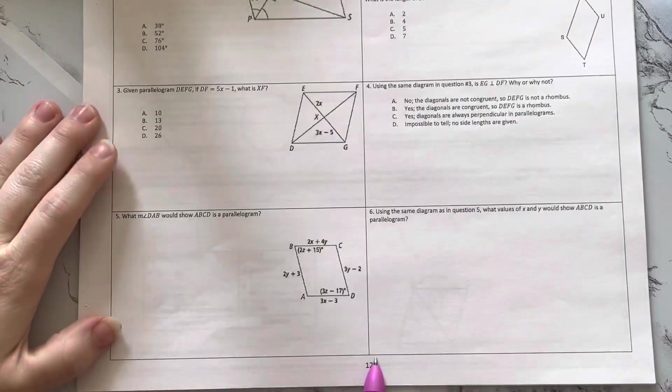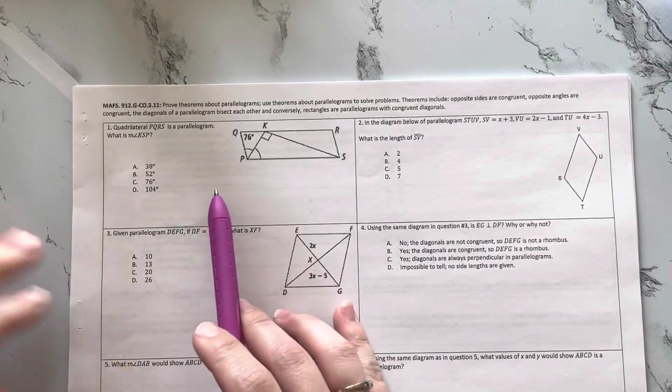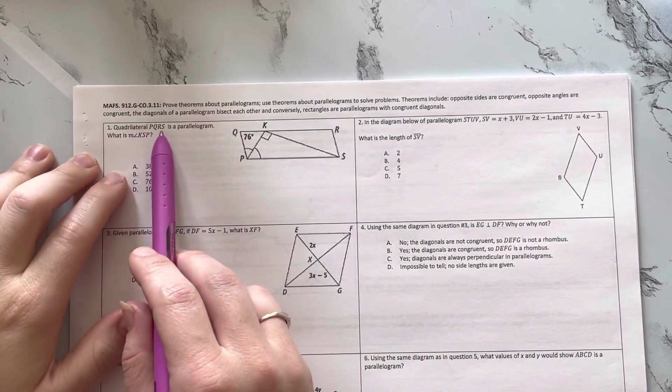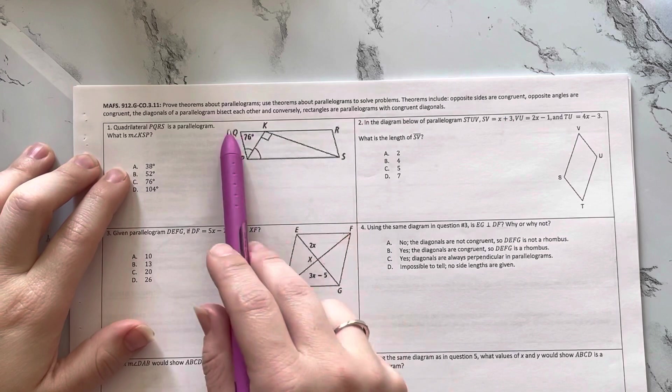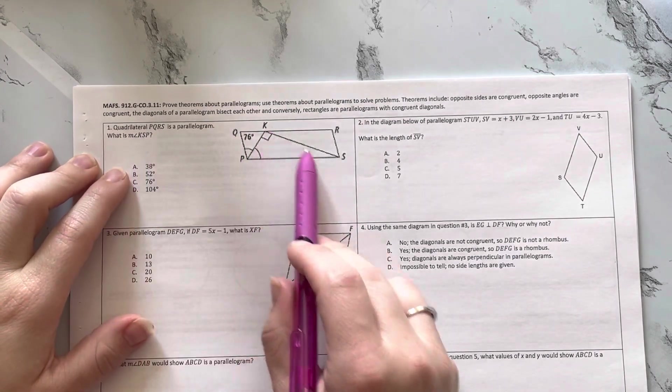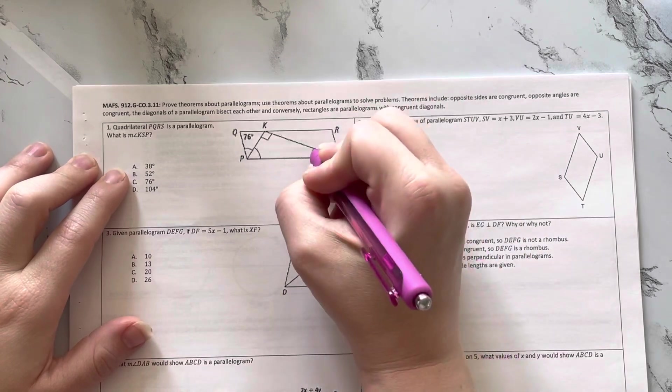Alright, our next video is going to start on page 12. So we're using parallelograms. Quadrilateral PQRS is a parallelogram. What is the measure of angle KSP? KSP, they want to know this angle.